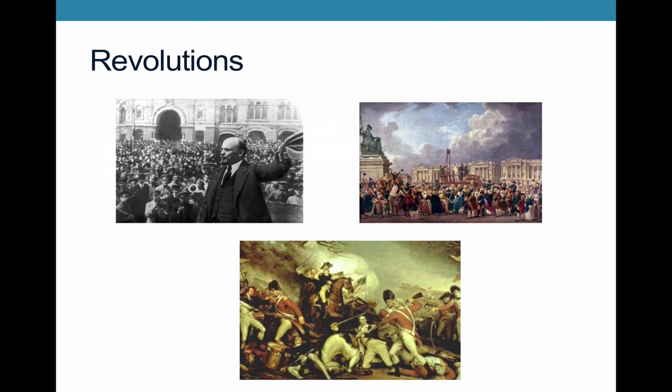In a social revolution, you have a transformation in both the political system and the social and economic system. The upper left photo is of Lenin from the Bolshevik Revolution, which doesn't just depose the old czarist system in Russia — it implements a completely new communist model. On the right-hand side, we have a photo from the French Revolution, which not only changed the political system but also liberated France from a feudal model, really changing the social order as well.